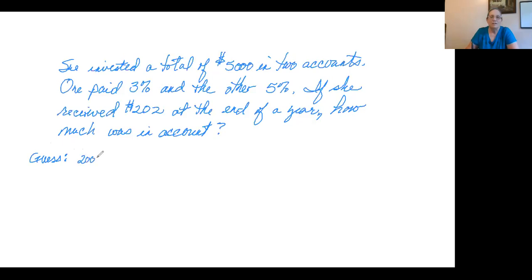So let's make a guess that there's $2,000 in the 3% account. Now what does this tell us? Then we would also know that there's $3,000 in the 5% account. How do we know that? Because she has $5,000. $2,000 and $3,000 adds up to $5,000.